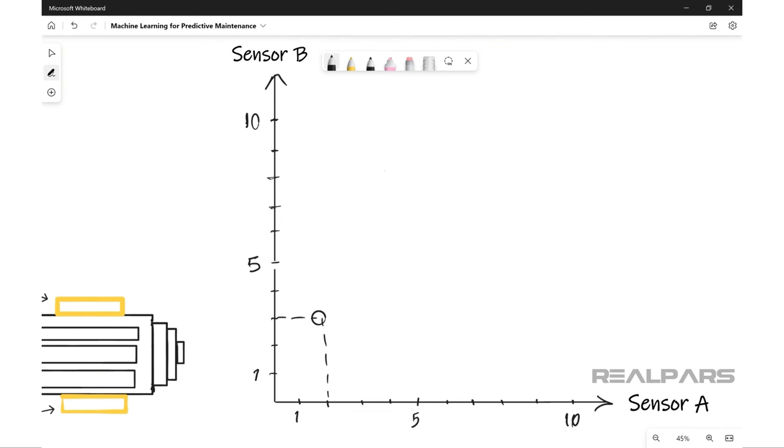Then a few minutes later I see that the value for sensor A is 3 and the value for sensor B is 4. A bit higher but still kind of in the same rate, right?